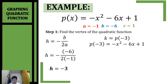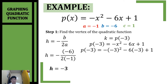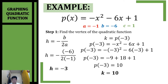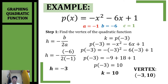For our k, I substitute the value of h into our original function. Substituting and simplifying, combining like terms, k is equal to 10. Now that we have h and k, our vertex is (-3, 10).